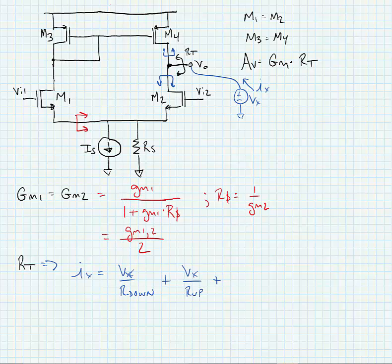We have to be careful here because what happens is the current that flows down this way doesn't want to go into the current source, so it continues around and goes into this current mirror and gets mirrored over that way. So we get a second term Vx over R down due to that current mirror that I just drew.